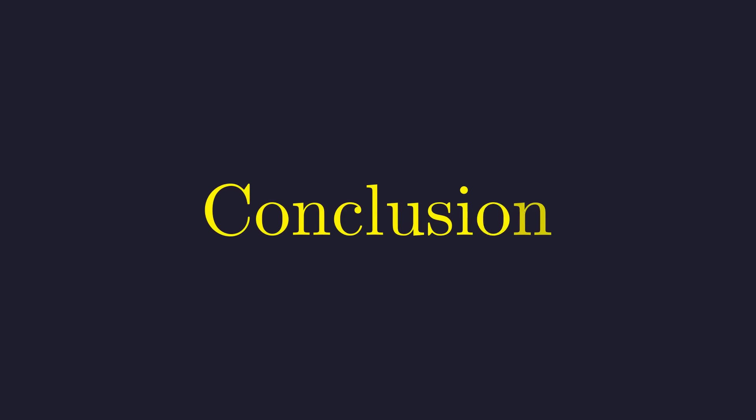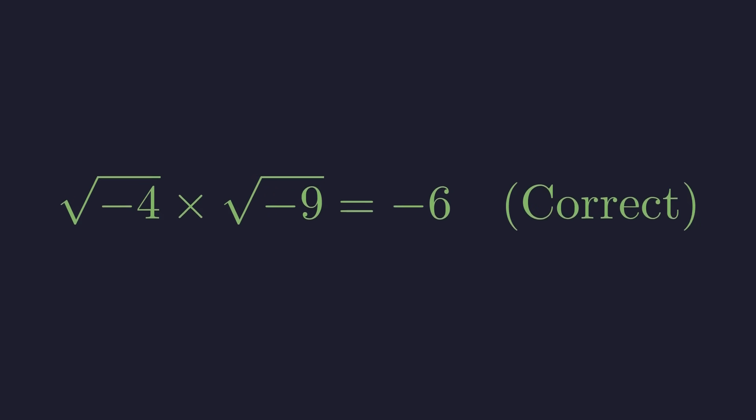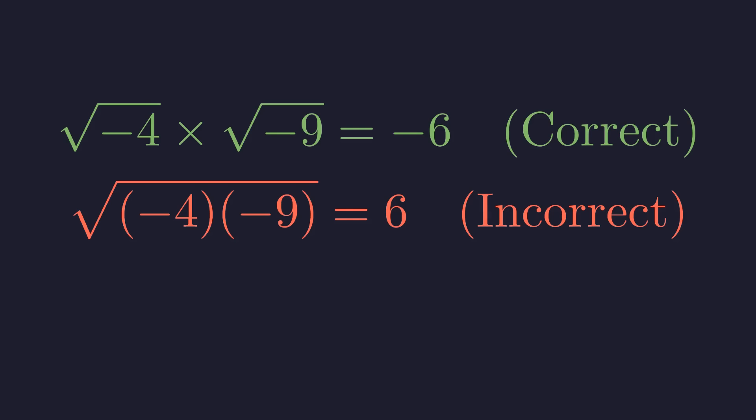Let's summarize the key takeaway. The correct answer is negative 6. The incorrect answer obtained by breaking the product rule is positive 6. The moral of the story: When multiplying square roots of negative numbers, always convert to i first. This will prevent you from falling into this classic trap.